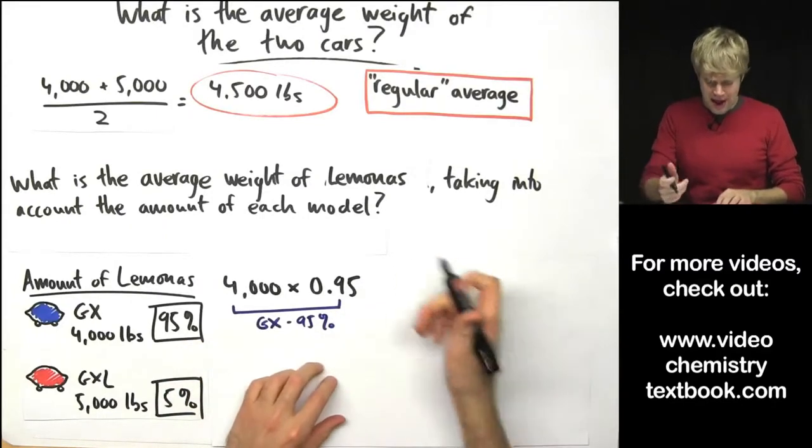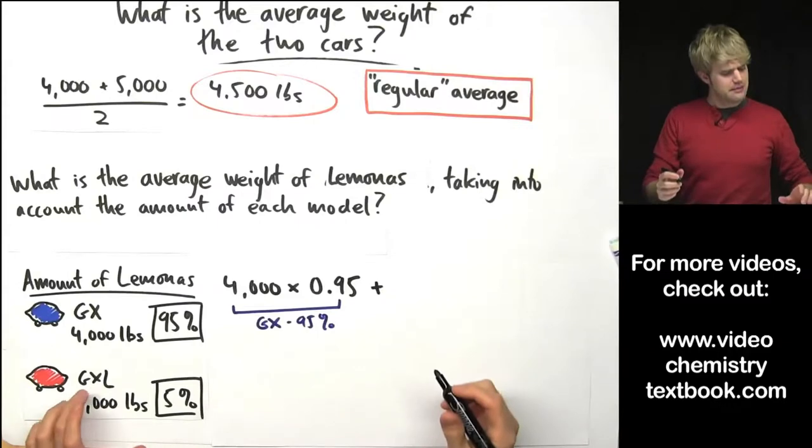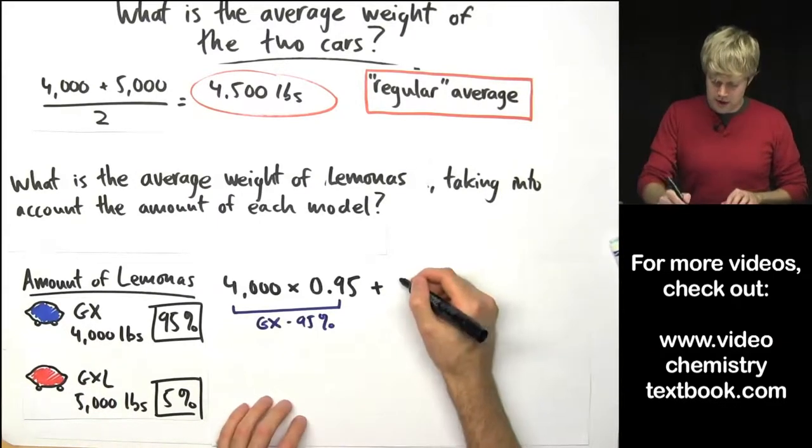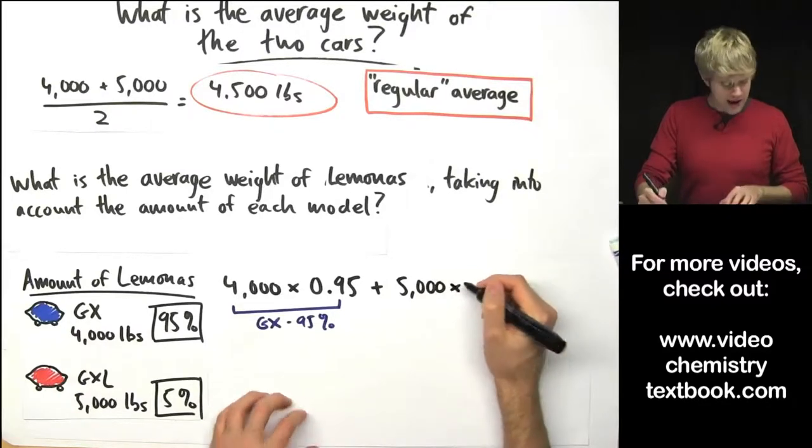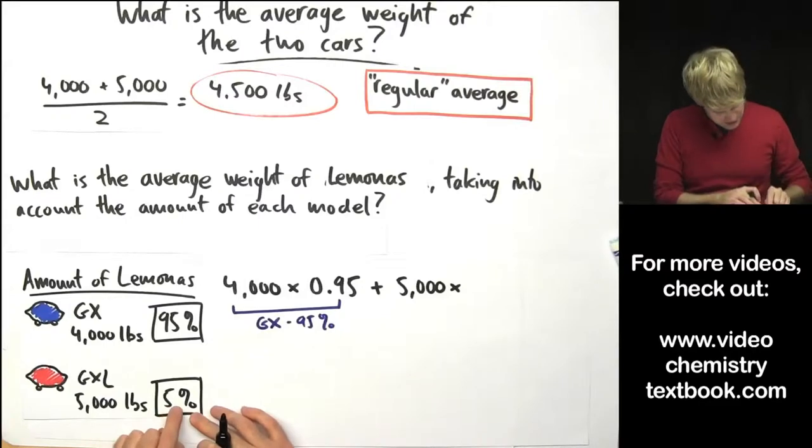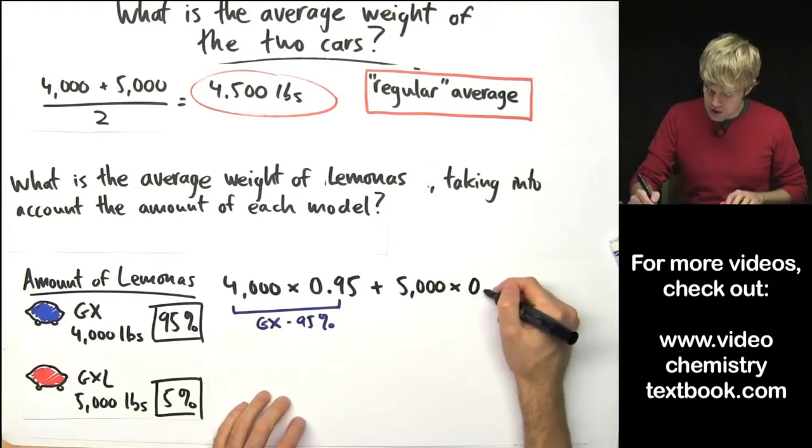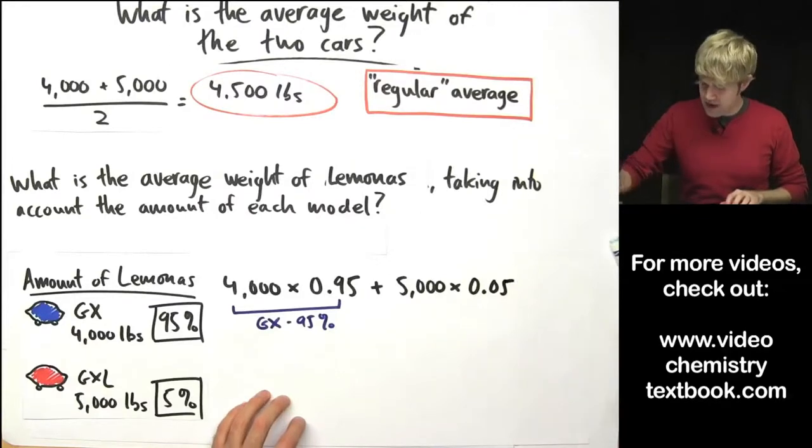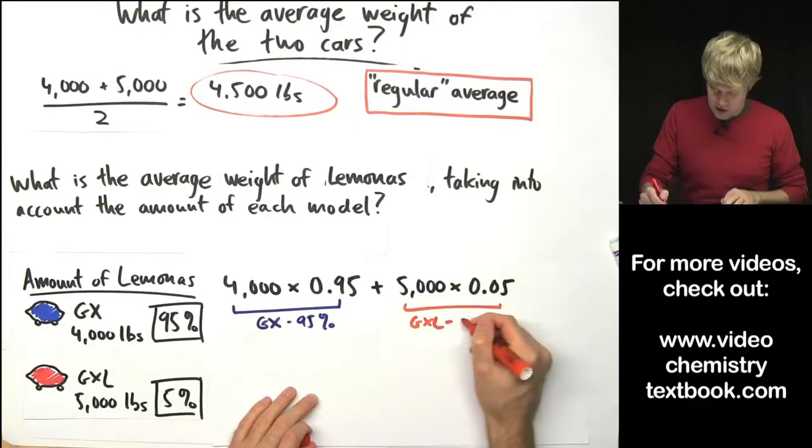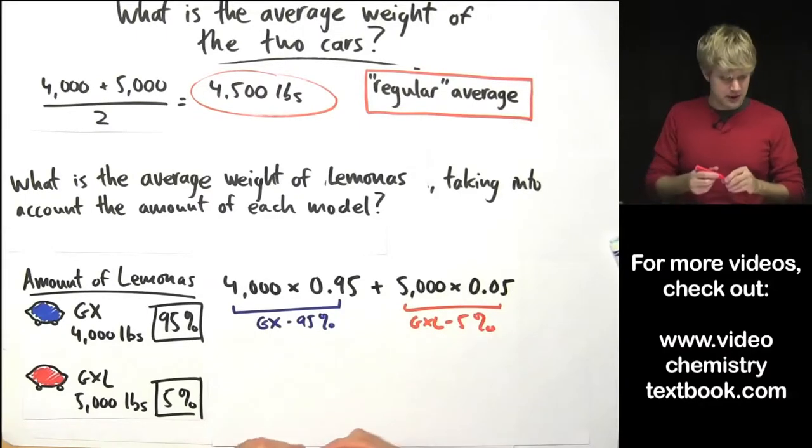Now I'm going to take that and I'm going to add it to the amount that I have of the GXL. So I'm going to take its weight, which is 5,000 pounds, and multiply by its abundance, also expressed as a decimal. So, again, the decimal place is here and we'll move it two spaces to the left. So it has 0.05. And this right here is the GXL, which accounts for 5% of my total.